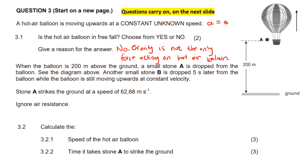When the balloon is 200 meters above the ground, a small stone A is dropped. Then another small stone B is dropped five seconds later from the balloon, while the balloon is still moving upwards at a constant velocity. Stone A hits the ground at a speed of 62.68 meters per second. We need to calculate the speed of the hot air balloon.